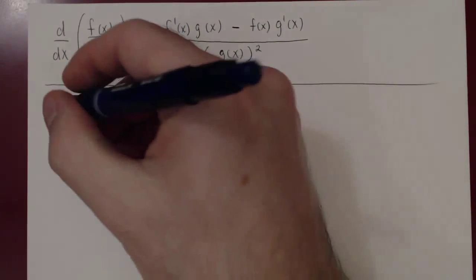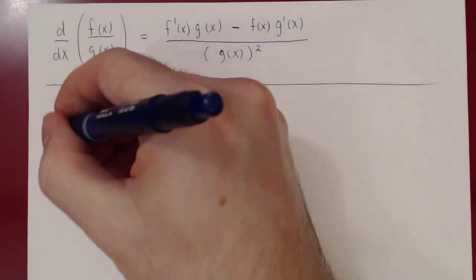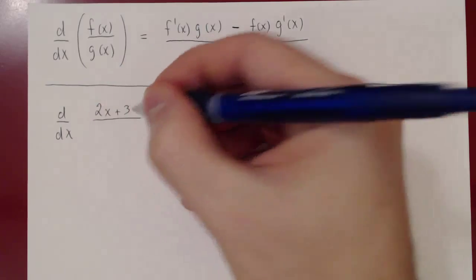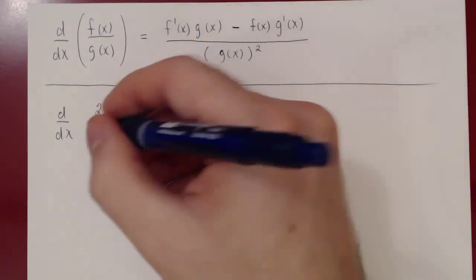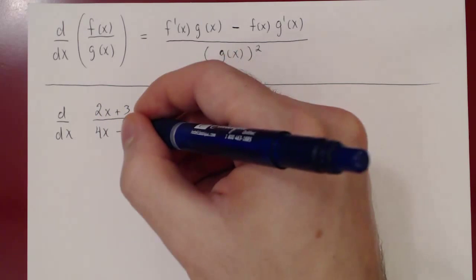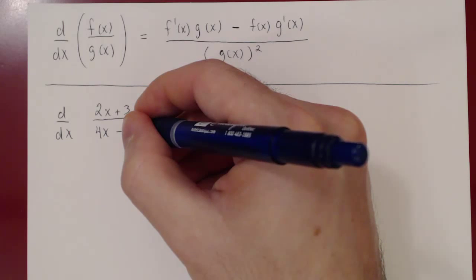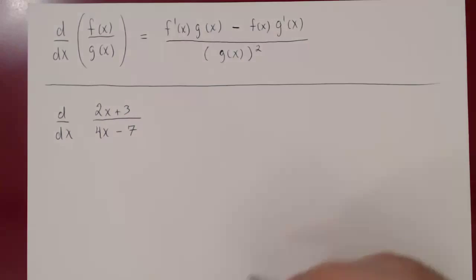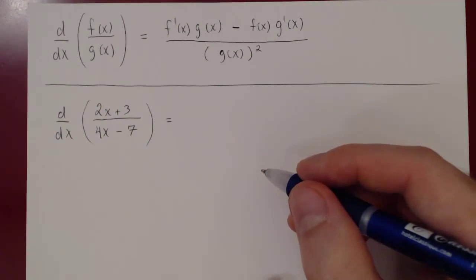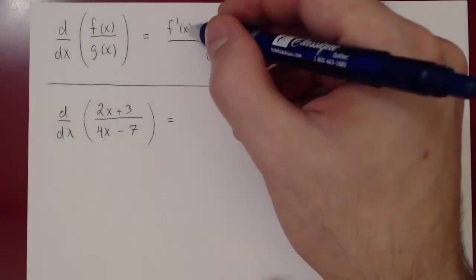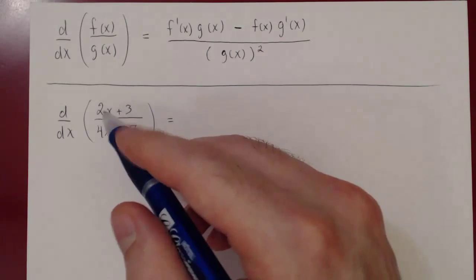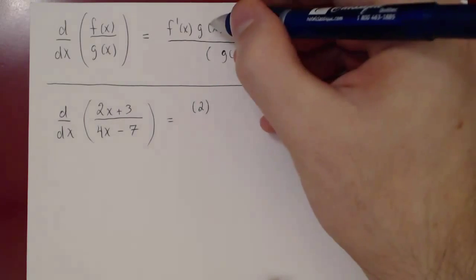Let's look at a few examples. If we look at the derivative of (2x + 3) over (4x − 7), we can apply the quotient rule since we have a quotient. The first term is the derivative of the numerator: the derivative of 2x + 3 is simply 2.